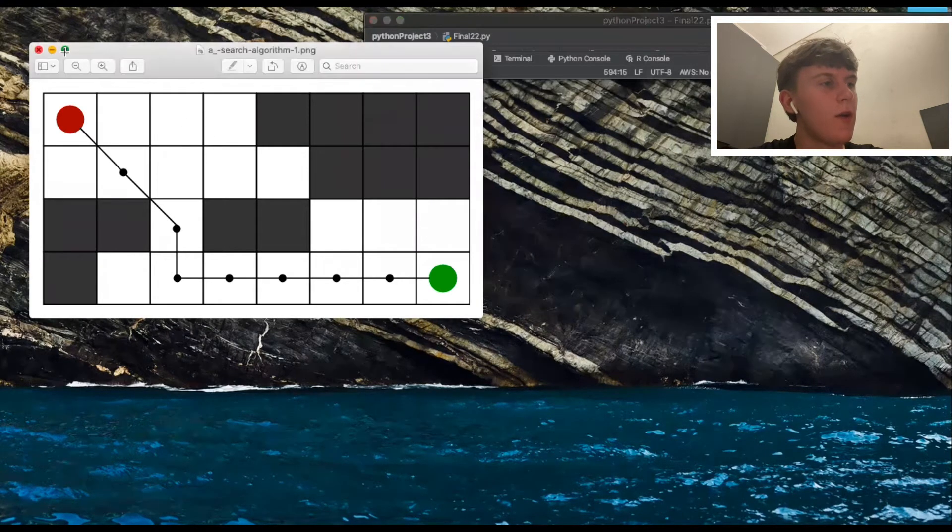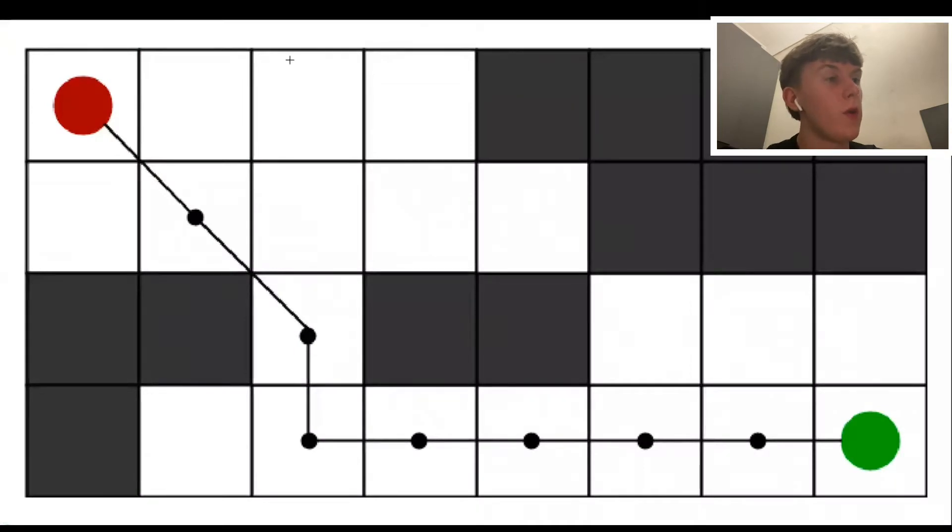Here we can see a diagram of a simple path. The red dot is the start node and the green dot is the end node. How the A* algorithm works is by finding the shortest path between these two as displayed by the black line.